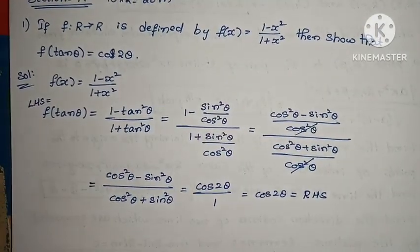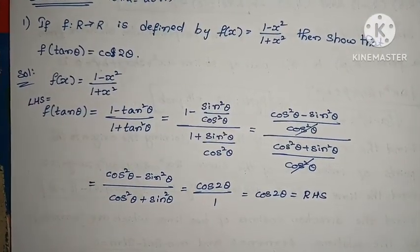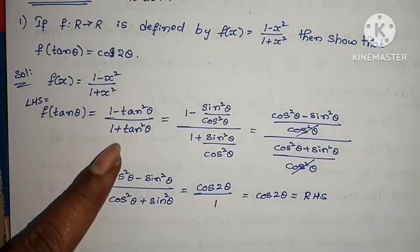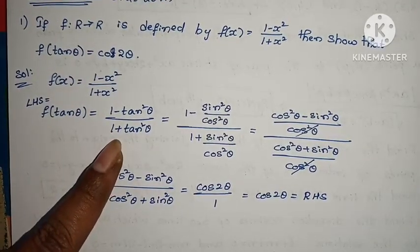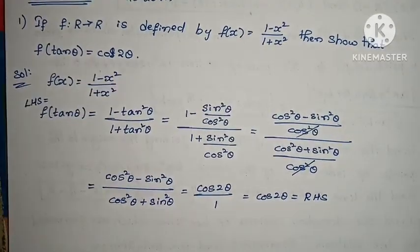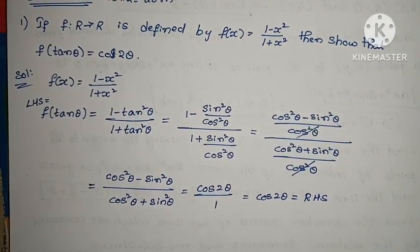So in 2-3 steps: 1 - tan²θ by 1 + tan²θ is directly the cos 2θ formula. Write the answer and get full marks.